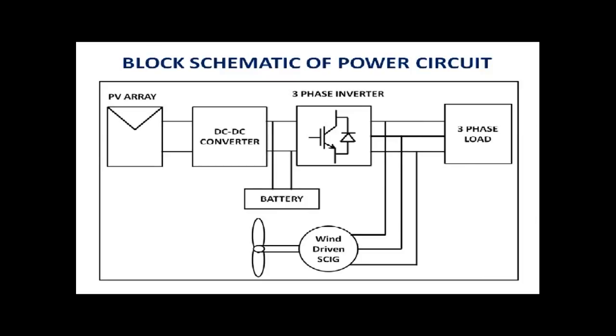Now you are watching the power circuit arrangement. There is a three-phase inverter. The output of the inverter, output of IG and three-phase load forms the point of common coupling. The inverter is fed by a PV-fed boost converter. The boost converter also charges the battery.